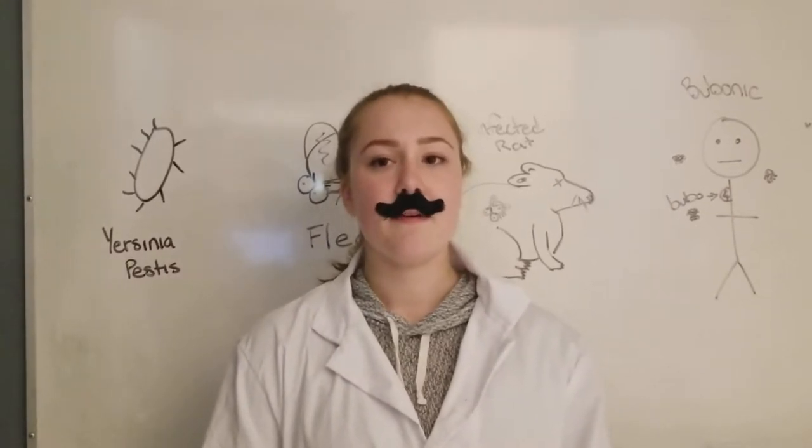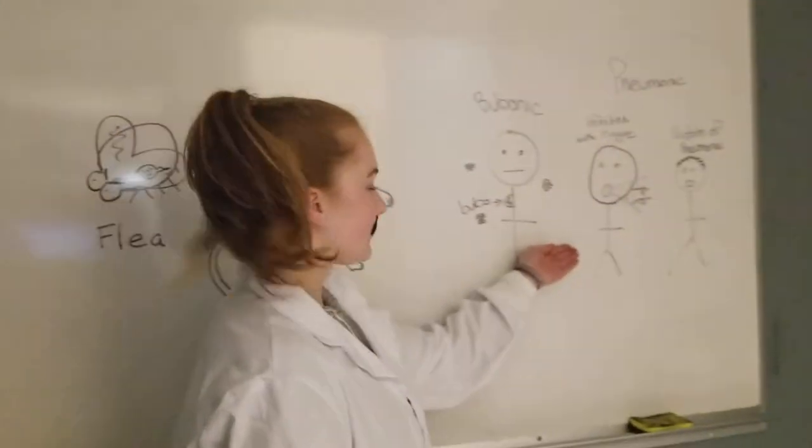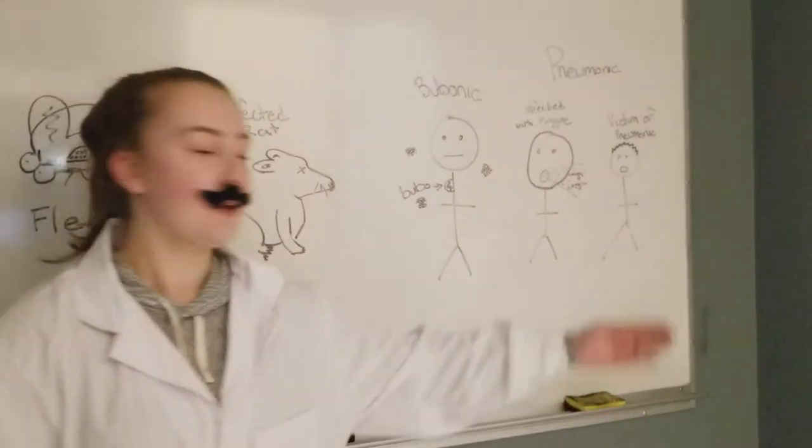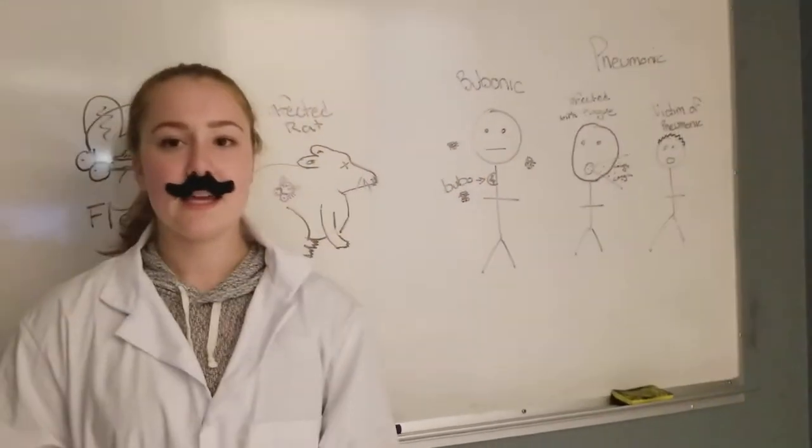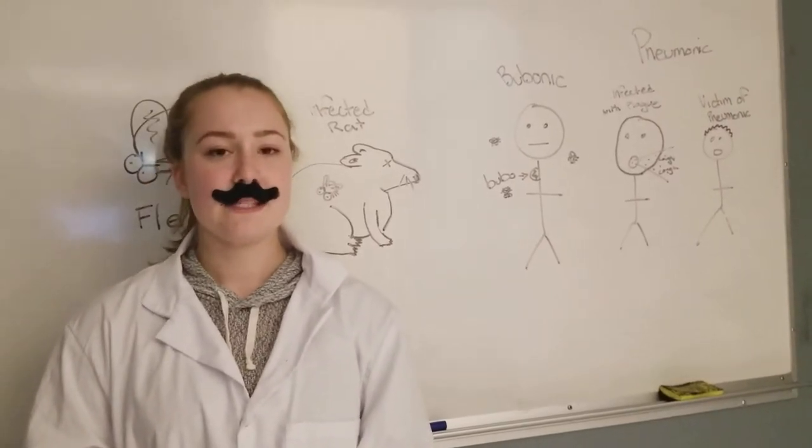Which brings me to the types of plague. Most common is bubonic. Secondly, pneumonic. And thirdly, if it reaches the bloodstream, septicemic plague.